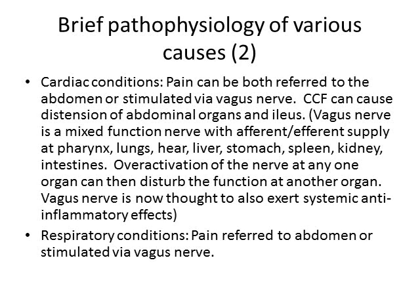With cardiac conditions such as a heart attack, pericarditis, or pericardial effusion, pain can be referred into the abdomen due to shared sensory nerve pathways between the abdomen and heart. Alternatively, inflammation around the heart or stimulation of the vagus nerve causes upset in the stomach and intestines, producing abdominal pain, nausea, and vomiting. Congestive cardiac failure itself causes fluid to collect in the abdomen as blood cannot circulate out, leading to distension of abdominal organs and ileus due to distension of the gastrointestinal walls, causing a buildup of contents and pain.